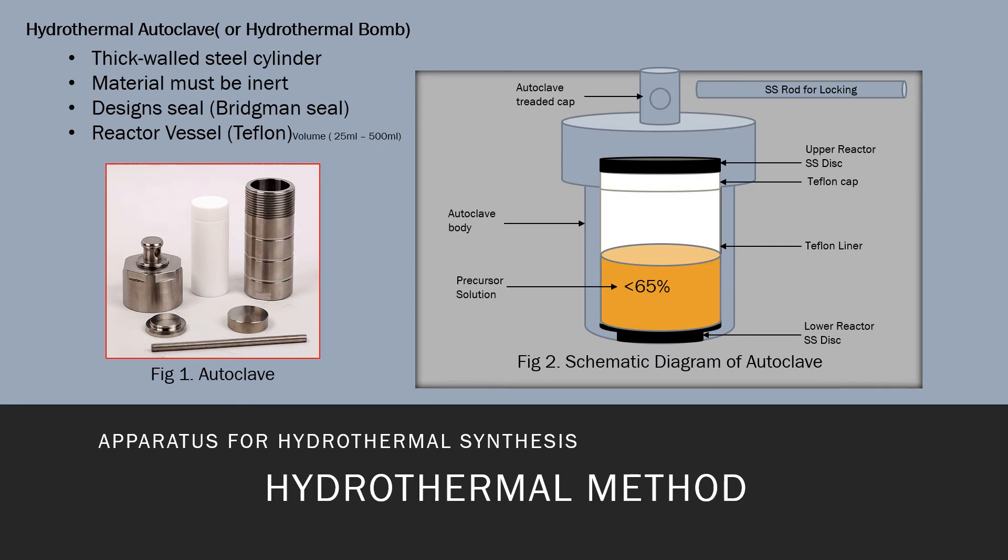The autoclave must withstand the high temperature and pressure. Also, the autoclave cap and the rod for locking, the upper reactor disc and the lower reactor disc must be made of stainless steel to support the reactor vessels inside the autoclave. The material must be inert, so no chemical activity or reaction formation with respect to the solvent.